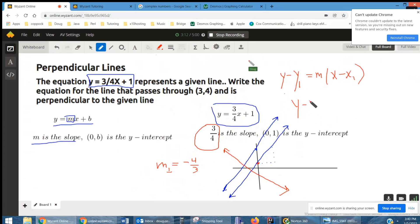slope is negative four-thirds, and the x sub 1, or the x-coordinate of the point that the line has to pass through, is that. So there's your equation.